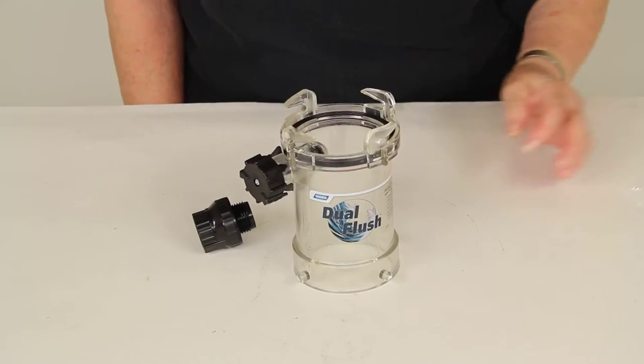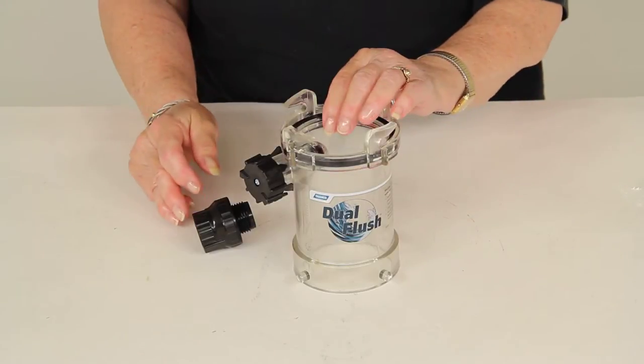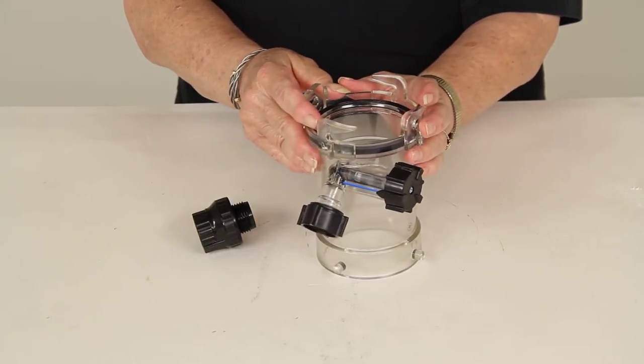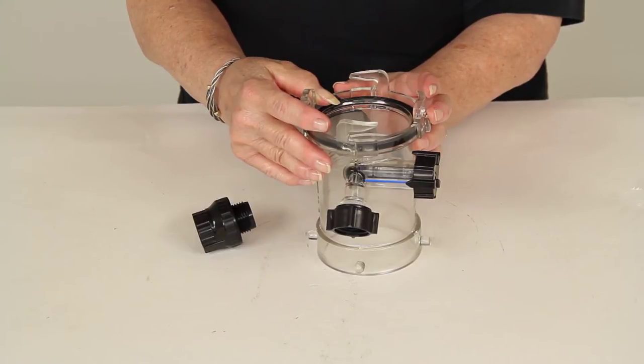Today we're reviewing part number CAM 39072 from CAMCO. This is a dual flush adapter for rinsing your RV holding tanks and sewer hoses.